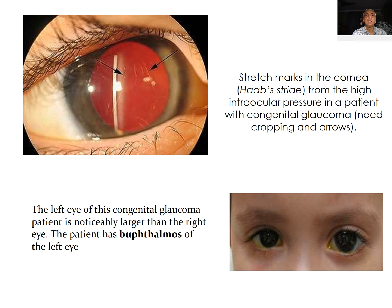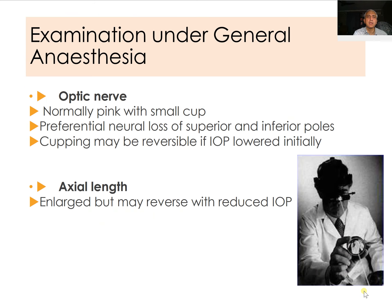Typical Haab's striae stretch marks in the cornea from high intraocular pressure can be seen in congenital glaucoma, along with buphthalmos of the affected eye. Examination under anesthesia also includes examination of the optic nerve, which is normally pink with a small cup. Preferential superior and inferior nerve fiber loss occurs as in adult glaucoma. Cupping may be reversible if IOP is lowered early, especially in children. The axial length is enlarged and may also reverse with reduced intraocular pressure.